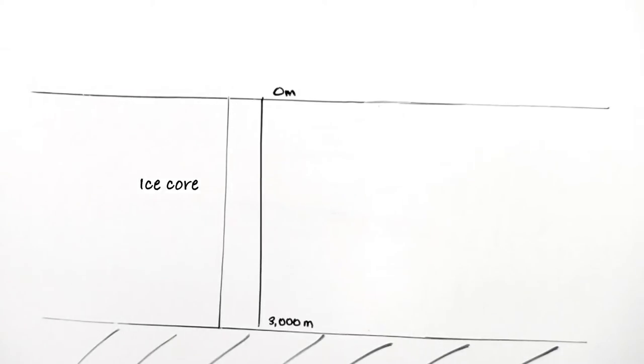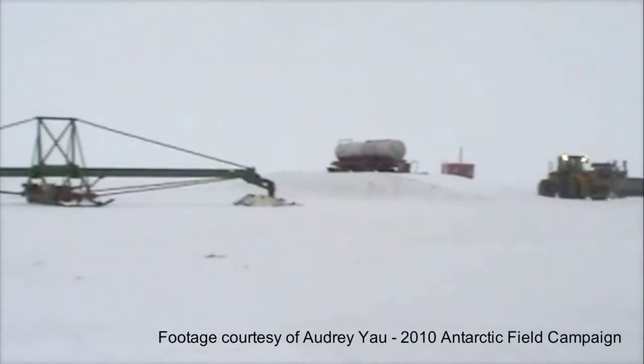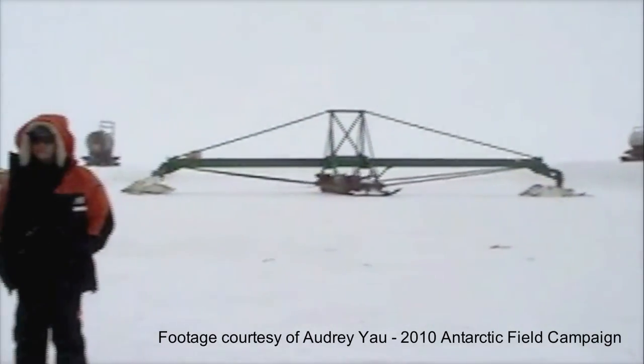At the bottom of the Antarctic ice sheet, at a depth of over 3,000 meters, is very old ice dated to 800,000 years in age. Ice cores drilled to the base of the Antarctic ice sheet can contain trapped air nearly one million years old.